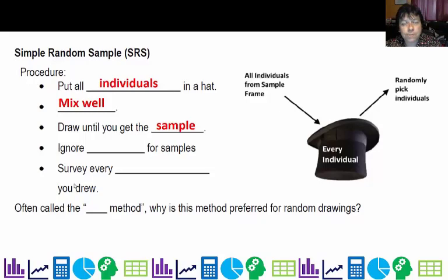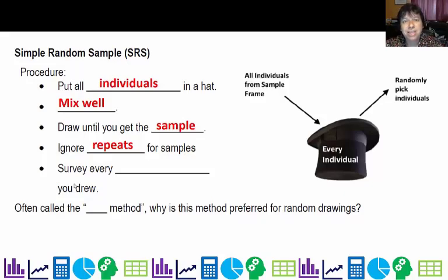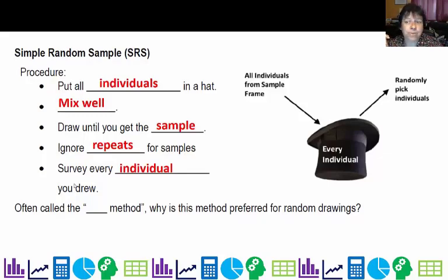If I draw Abe's name first and then put his name back in the hat, people would say you're only supposed to draw them once. For samples, we're only supposed to draw them once. So if you put the name back in the hat, you need to ignore repeats. One way to avoid that is to just leave the name out of the hat. But if you're using computers or calculators, they may generate repeats, so it's always good to say 'ignore the repeats.' After that, you survey every individual you drew, and that's your sample. This is often called the hat method, and it's preferred because all outcomes are equally likely — no one is more likely to get selected than anyone else.